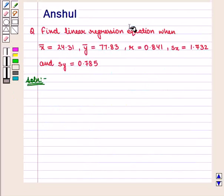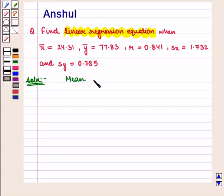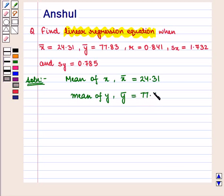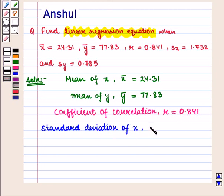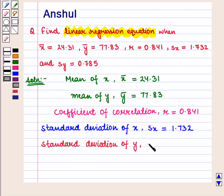In this question we have to write the linear regression equation. We are given: mean of x, x̄ = 24.31; mean of y, ȳ = 77.83; correlation coefficient r = 0.841; standard deviation of x, sx = 1.732; and standard deviation of y, sy = 0.785.